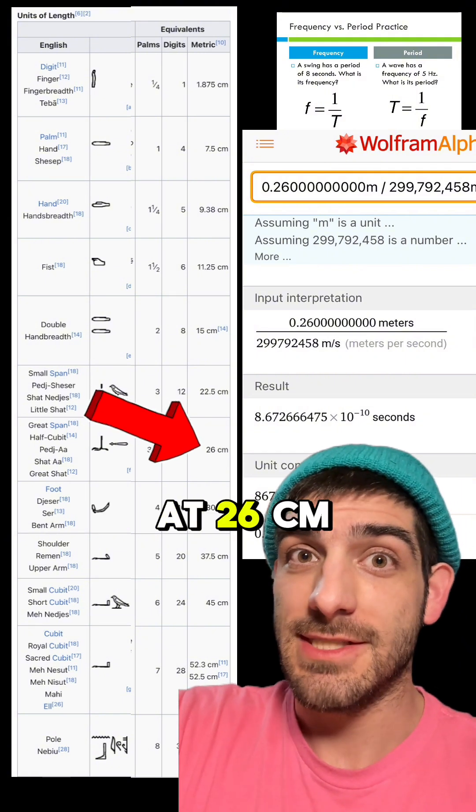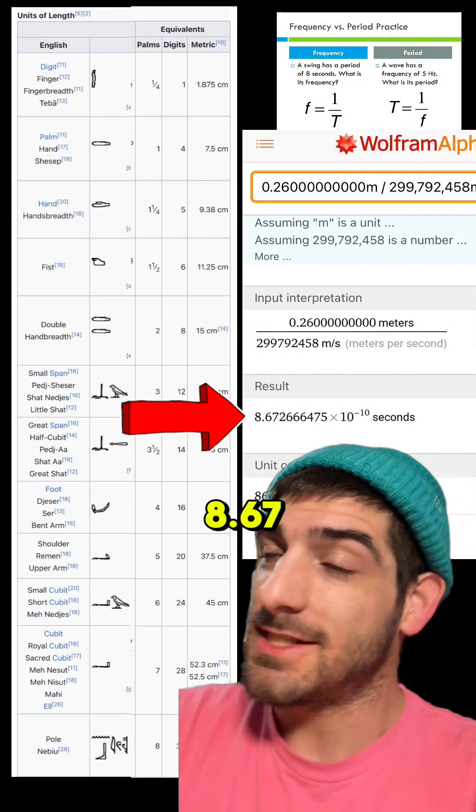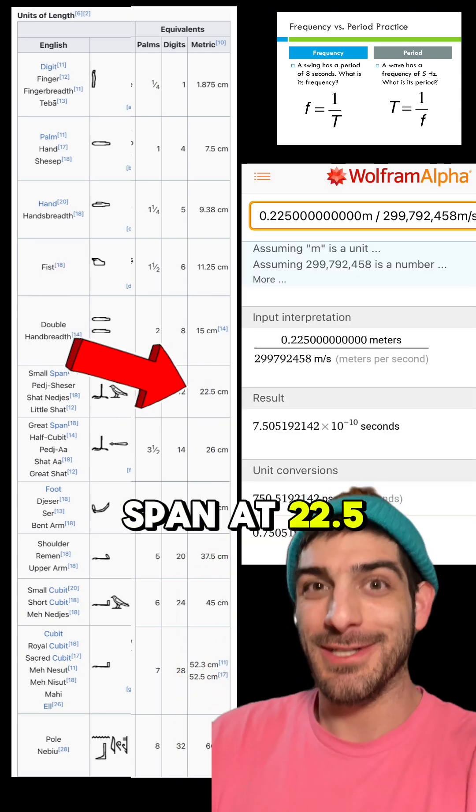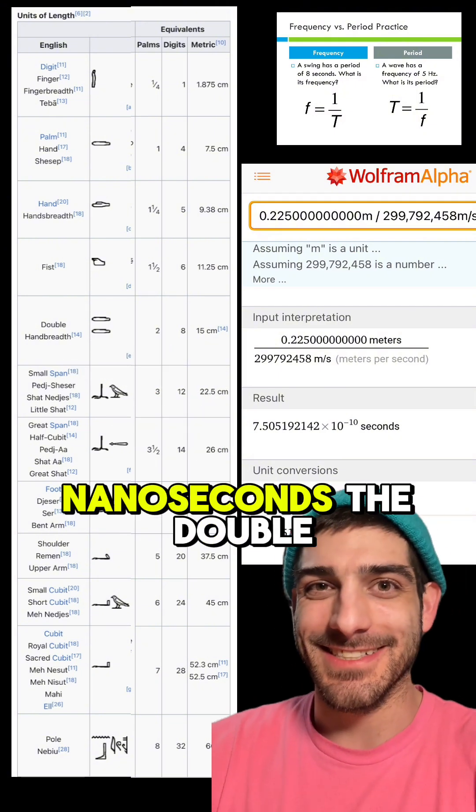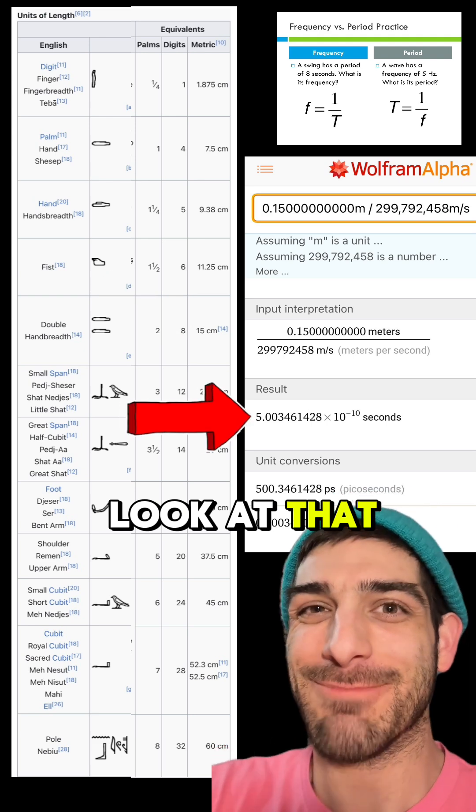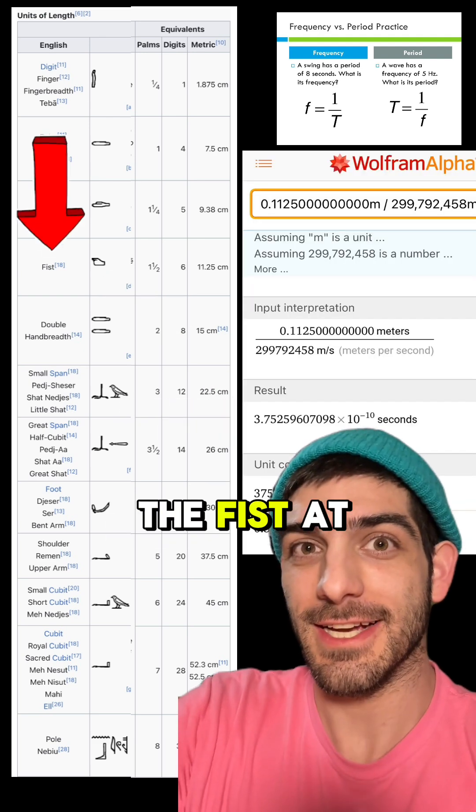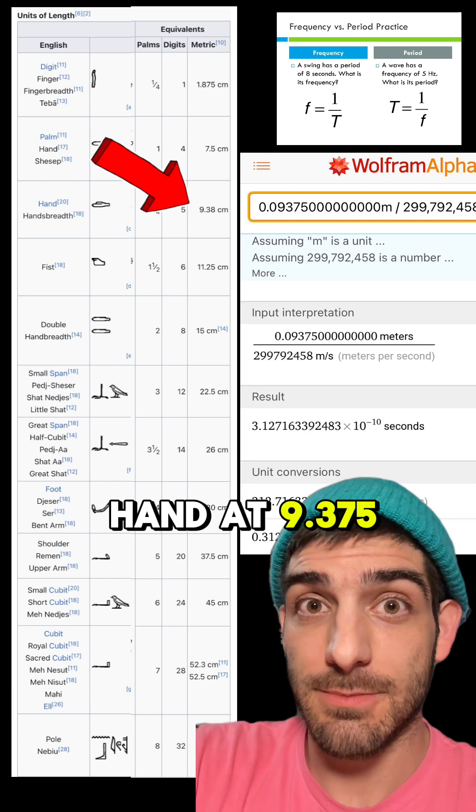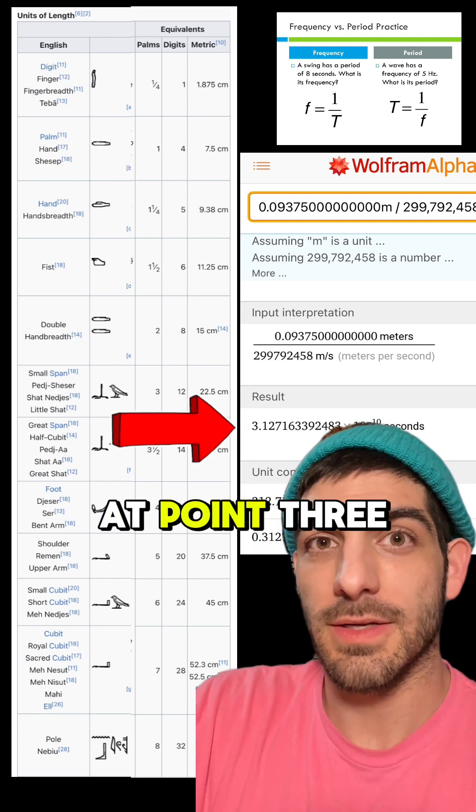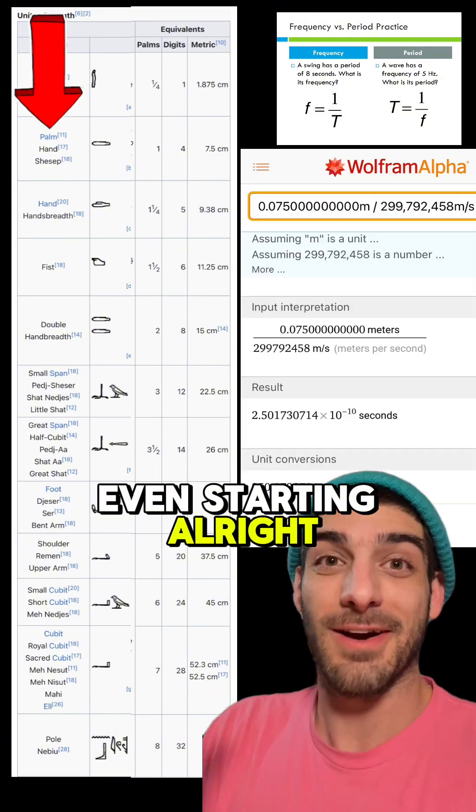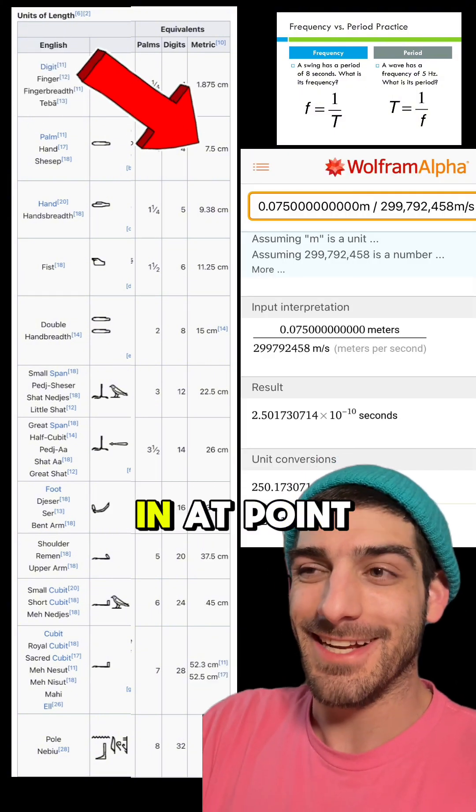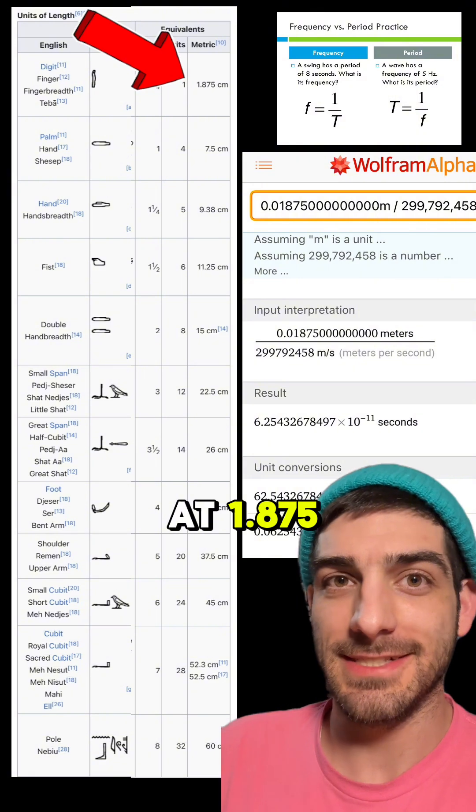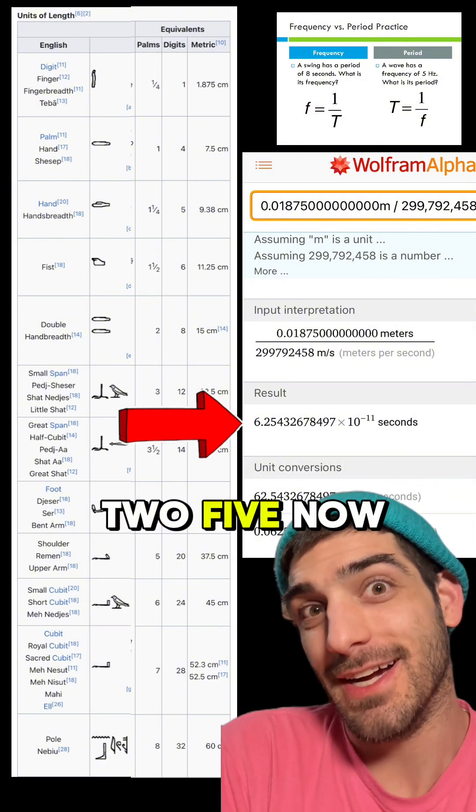I'll give you this one. The great span at 26 centimeters doesn't come out very nice. It's 8.67. Small span at 22.5 centimeters, 0.75 nanoseconds. The double hand at 15 centimeters, 0.5 nanoseconds. The fist at 11.25 centimeters, 0.375 nanoseconds. The hand at 9.375 centimeters comes in at 0.3127 nanoseconds. Back to the palm at 7.5 centimeters, 0.25 nanoseconds. And the finger at 1.875 comes in at 0.0625.